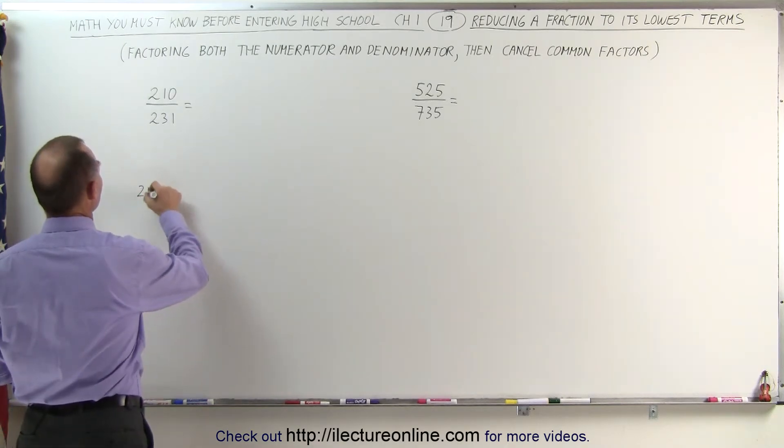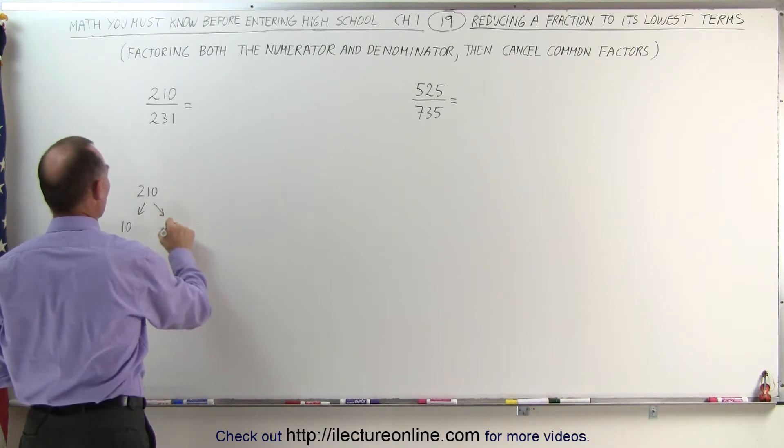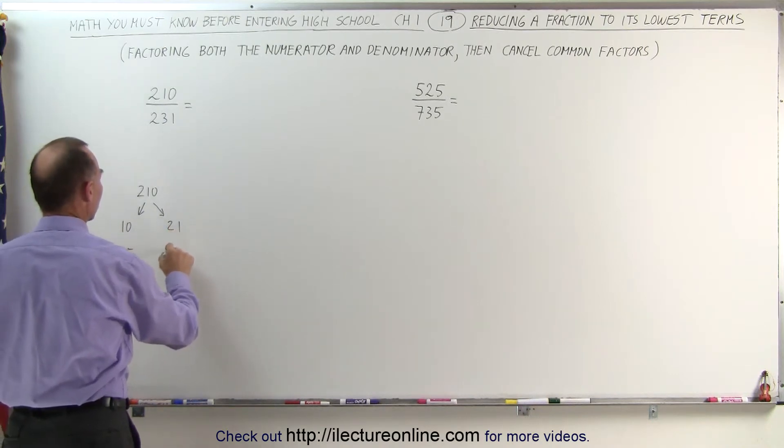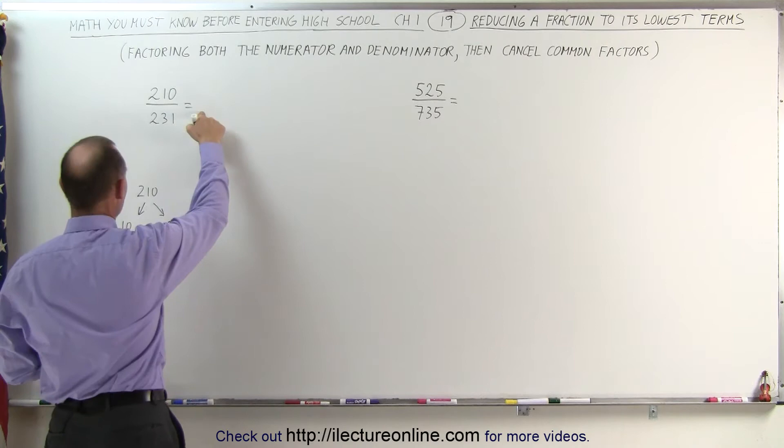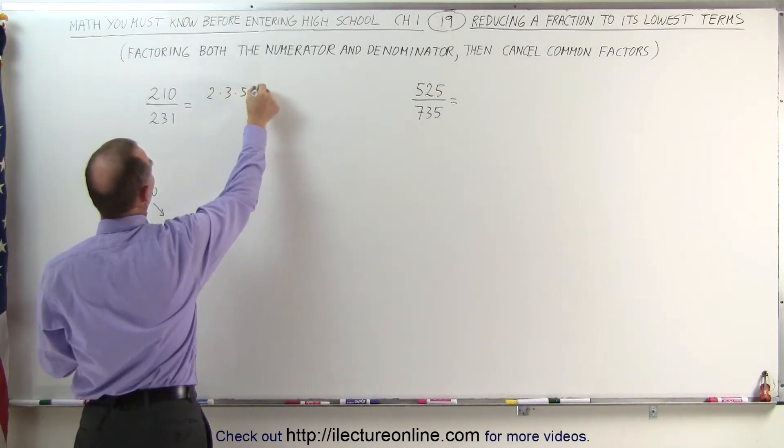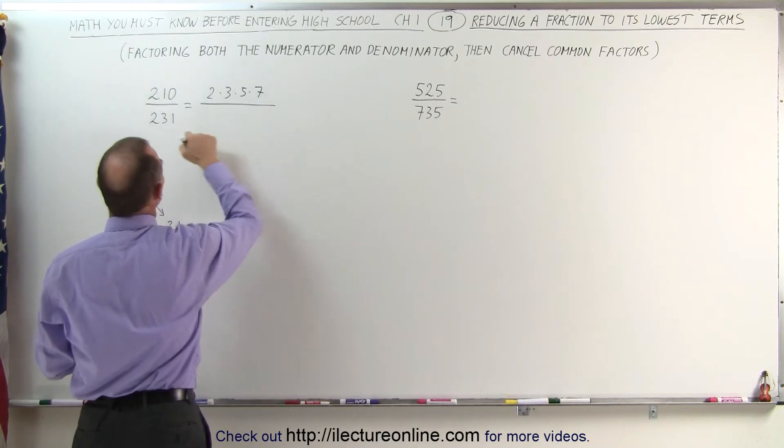210 can be written as the product of 10 times 21, and the factors of 10 are 2 and 5, and the factors of 21 are 3 and 7, which means that 210 can be written as 2 times 3 times 5 times 7, and then we divide that